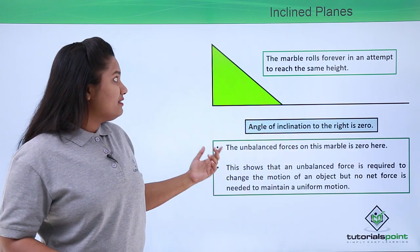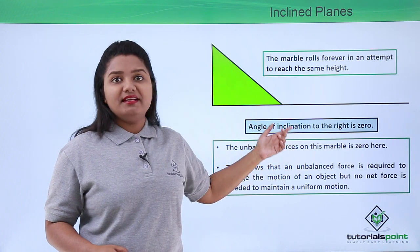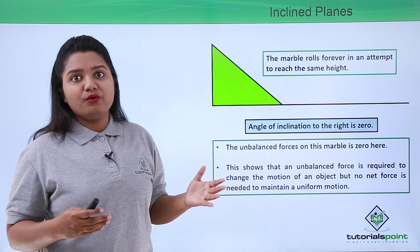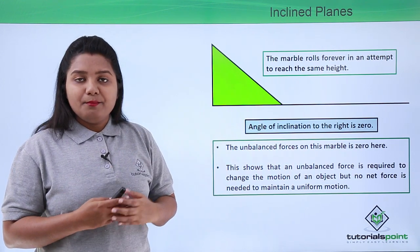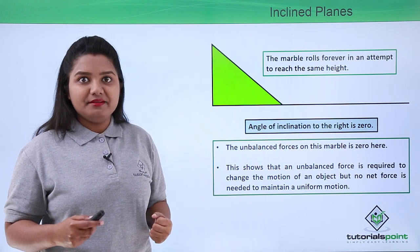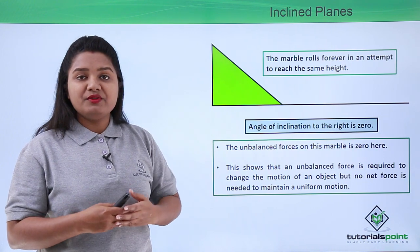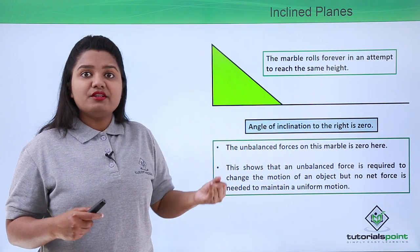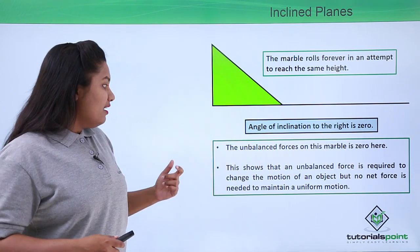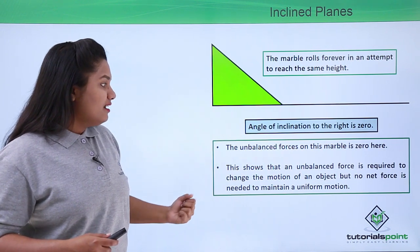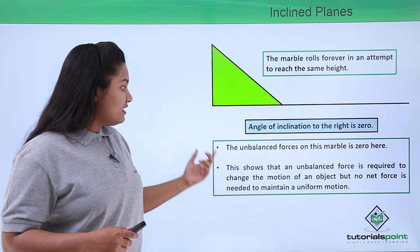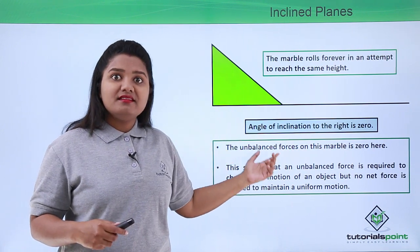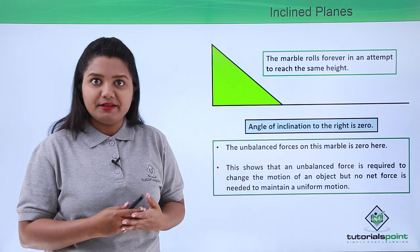We have assumed that the unbalanced force on this marble is zero in this ideal case, but in practice this doesn't happen. There are forces that come into play as soon as a body starts moving — for example, frictional force and air resistance. We can conclude that an external unbalanced force is required to change the motion of an object, but no net external force is needed to maintain the uniform motion that an object is already making.